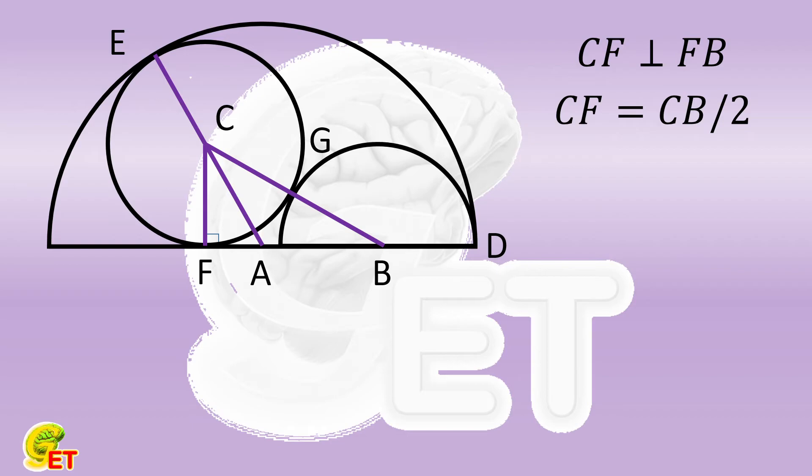So in the right triangle CBF, we can get two conclusions. The angle CBF is equal to 30 degrees. And BF is equal to square root of 3 times CF.